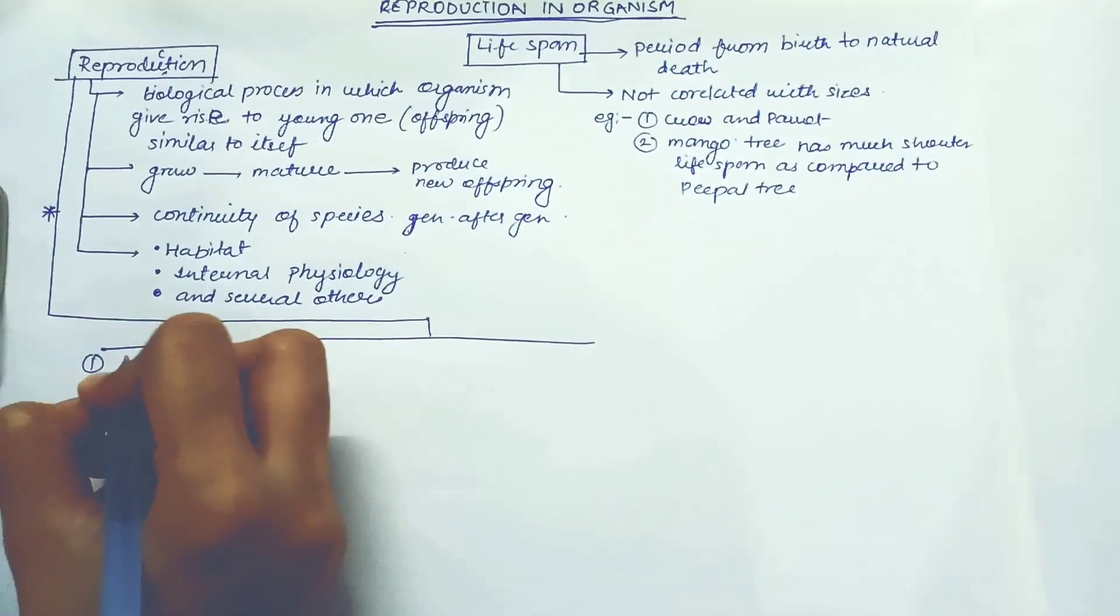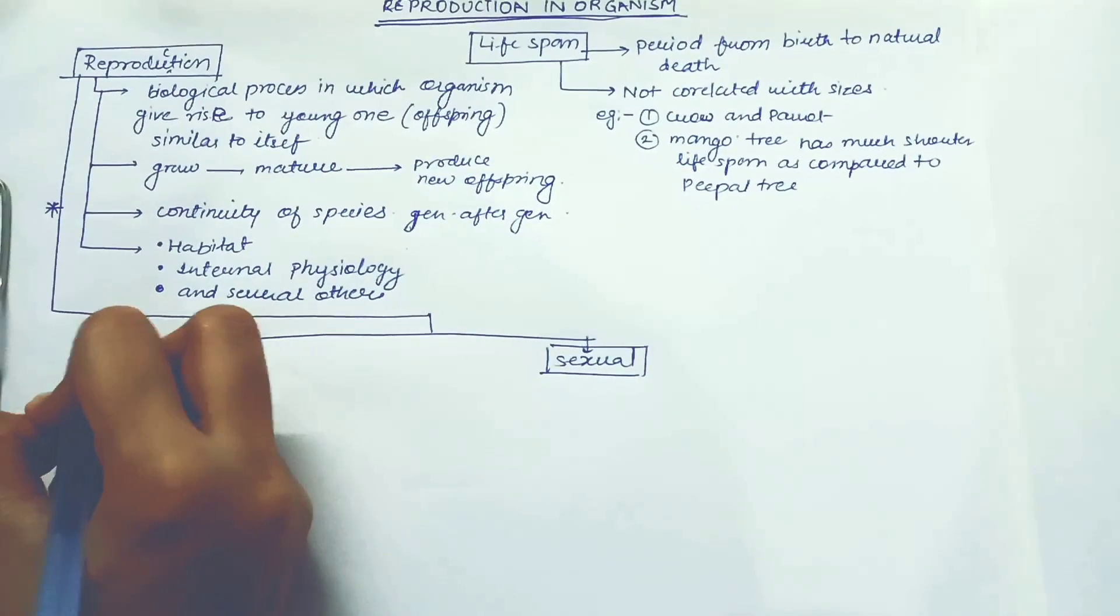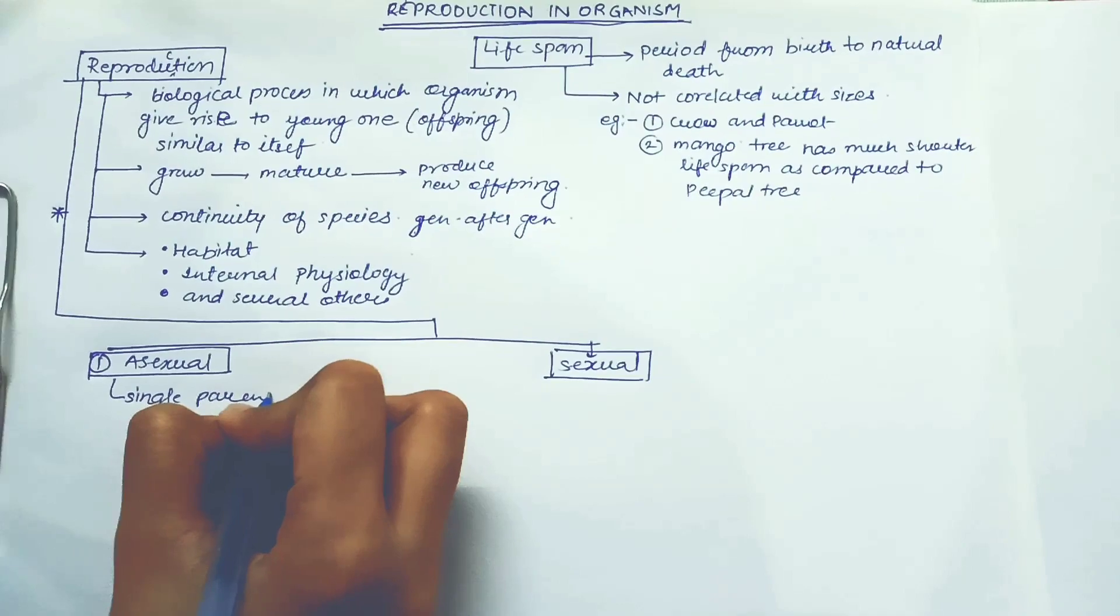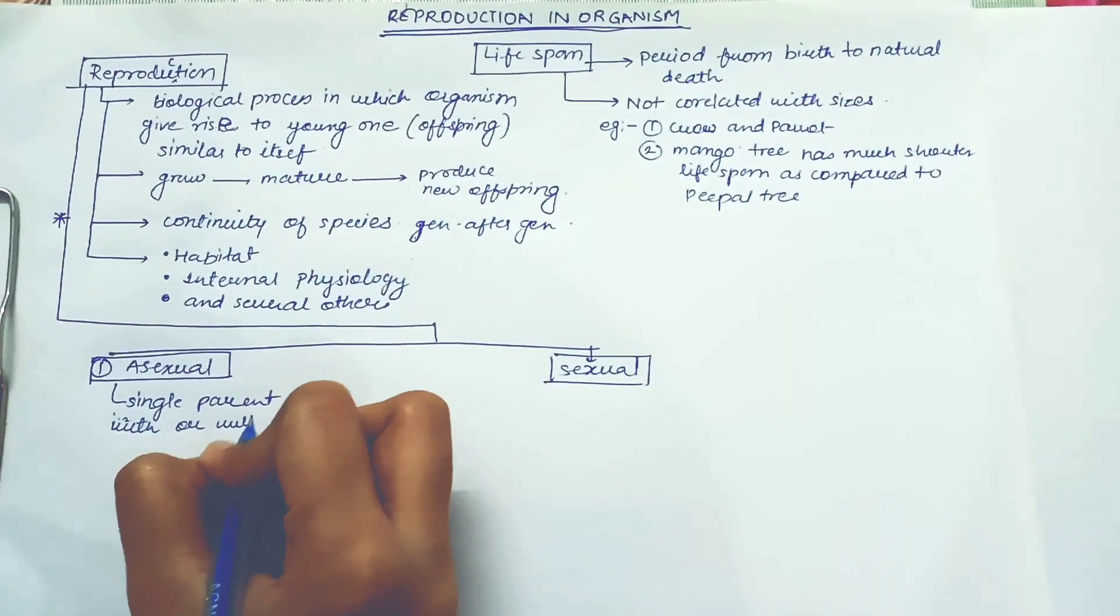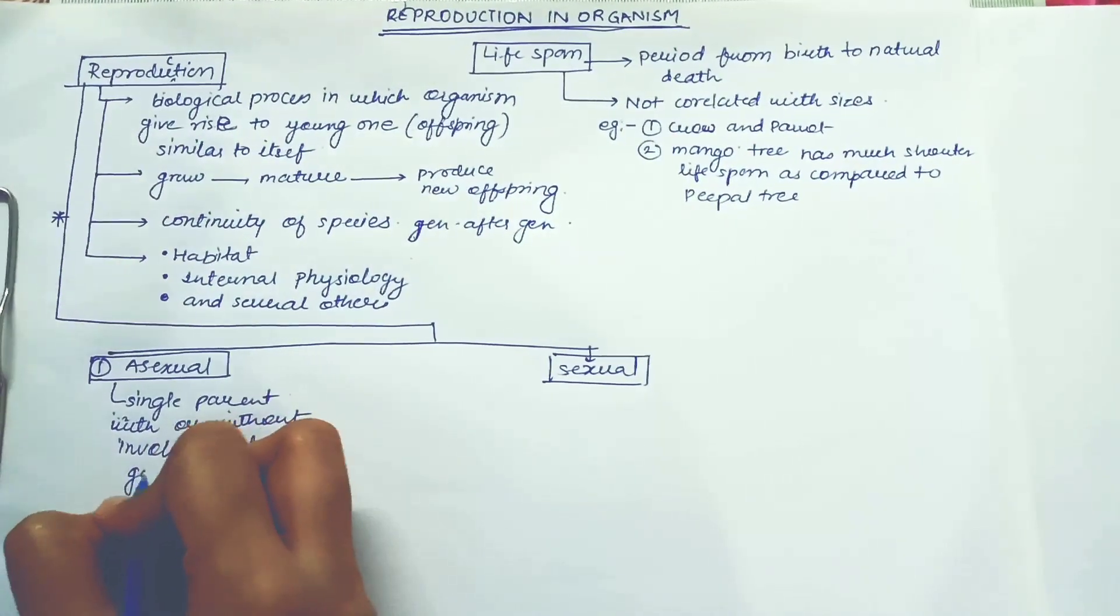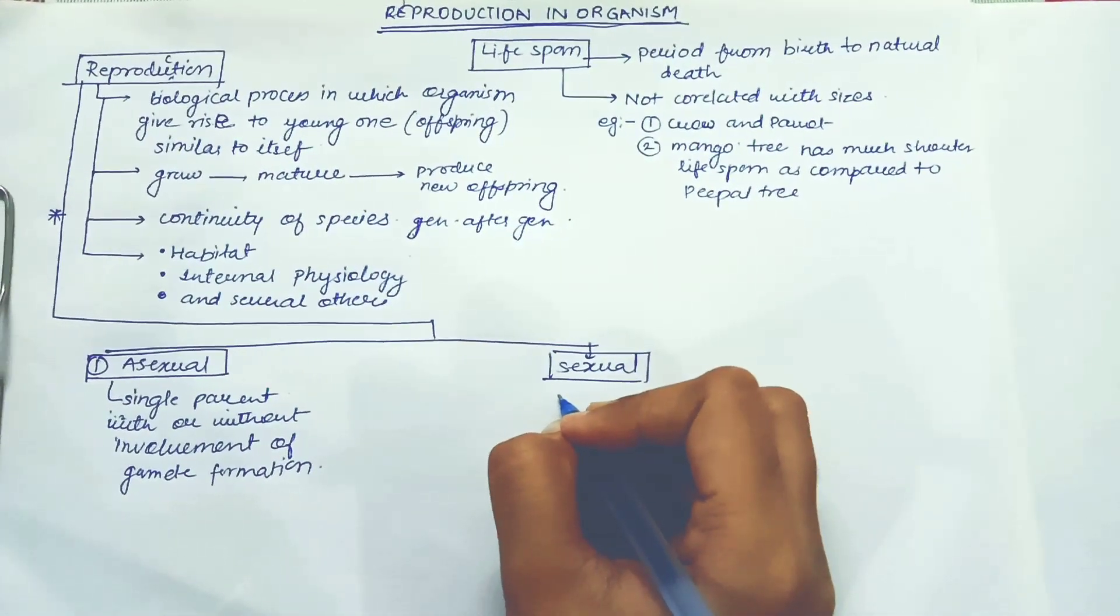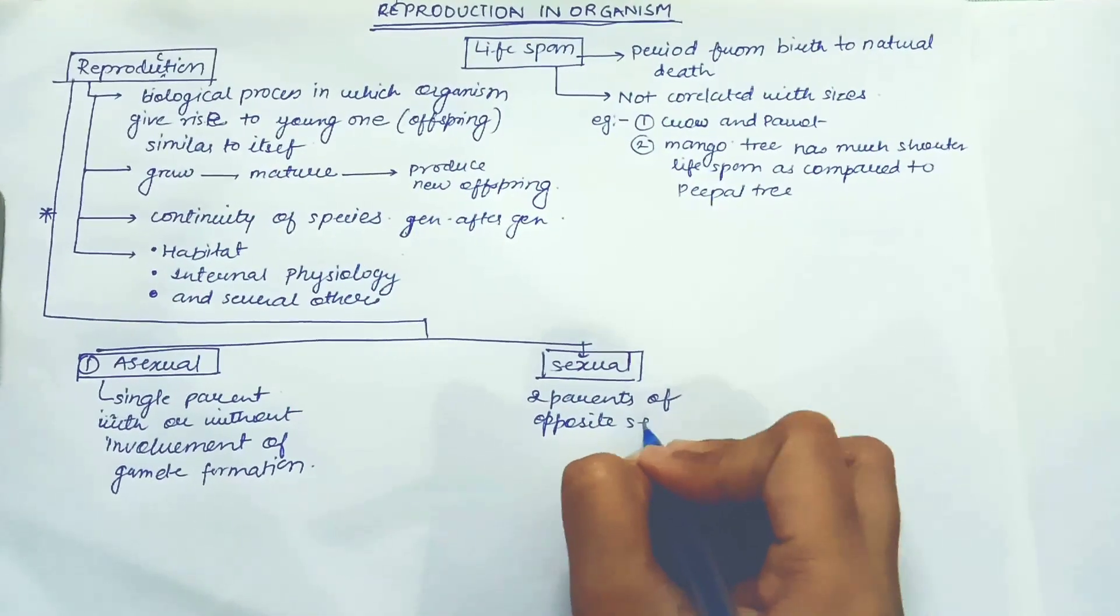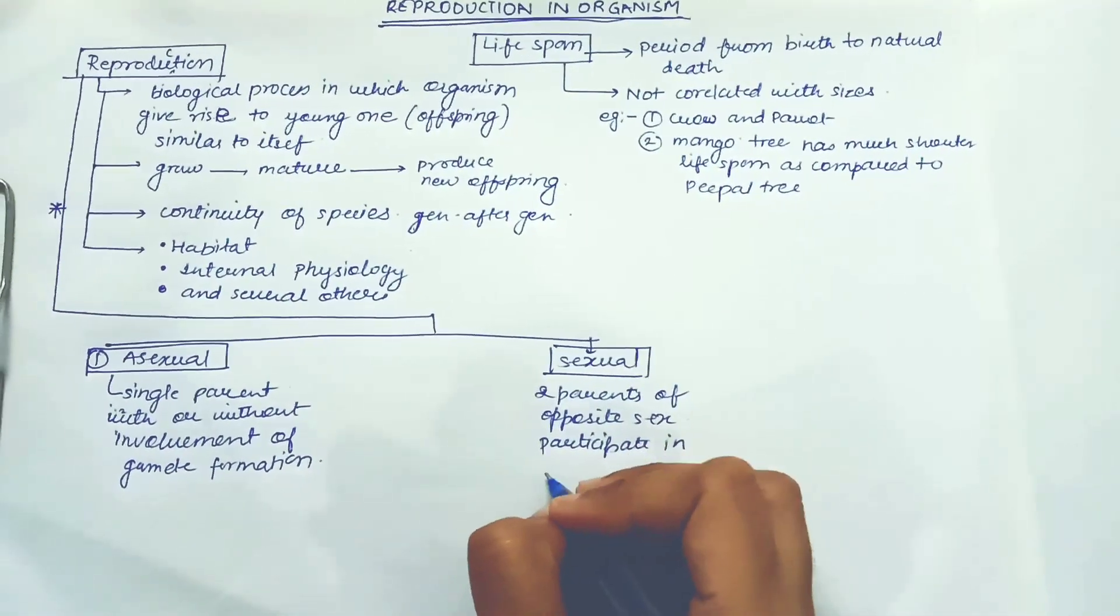Number one is asexual and number two is sexual. So asexual reproduction is where single parent reproduces without gamete formation. And next we'll be talking about sexual reproduction when two parents of opposite sex participate in reproduction.